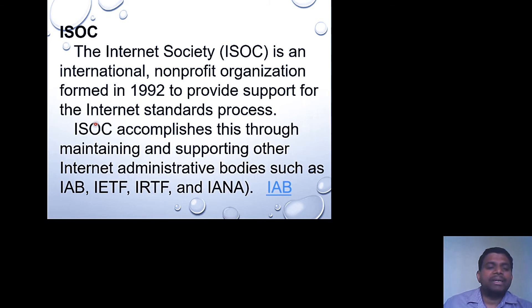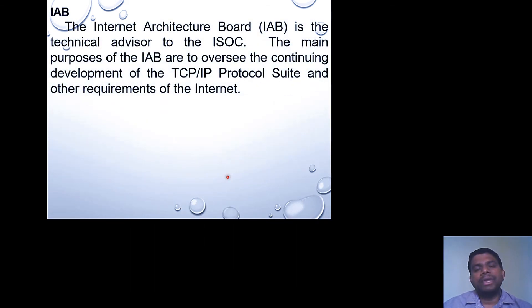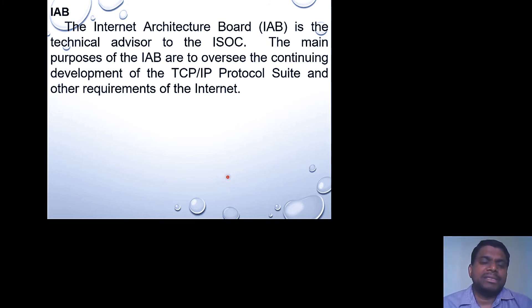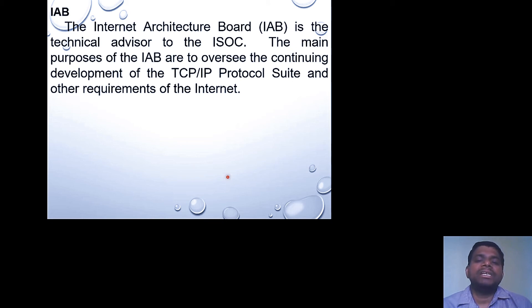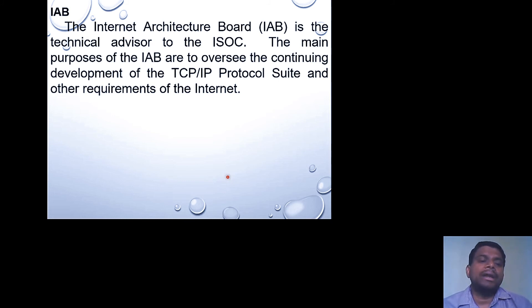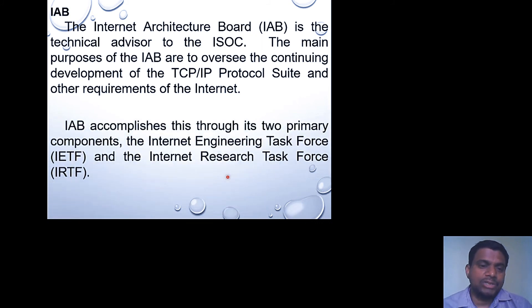The Internet Society accomplishes its goals with the help of the Internet Architecture Board, the Internet Engineering Task Force, the Internet Research Task Force, and IANA. Together these bodies help the Internet Society maintain internet administration. The Internet Architecture Board's main responsibility is to act as a technical advisor to the Internet Society, providing technical advice and suggestions.